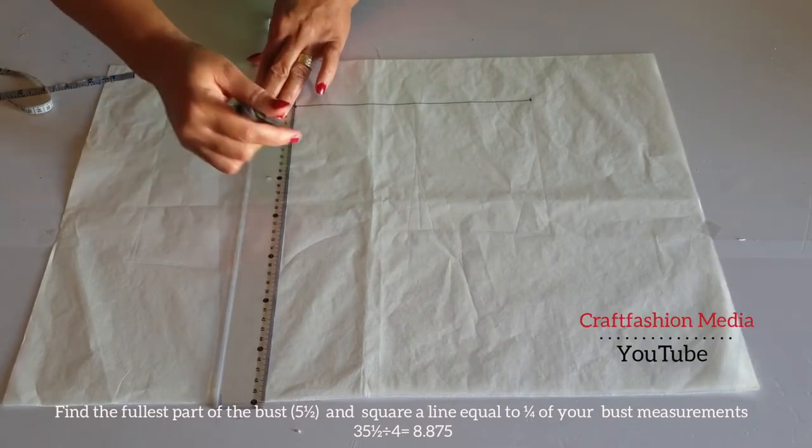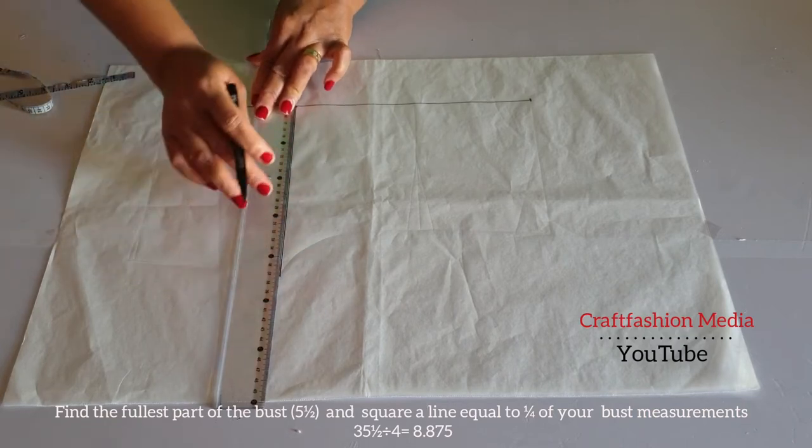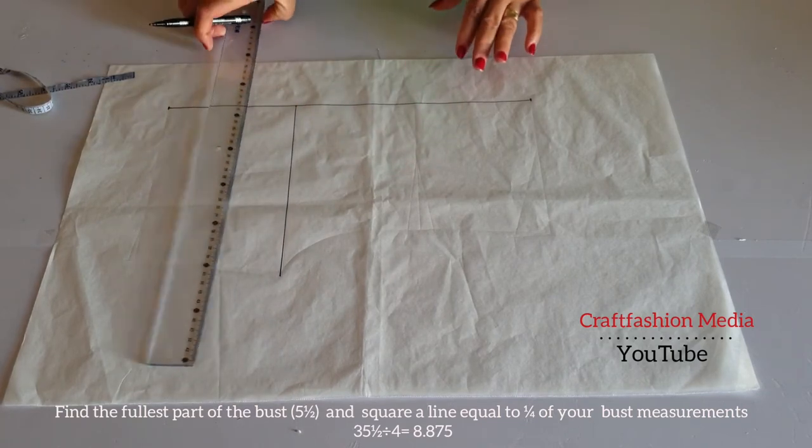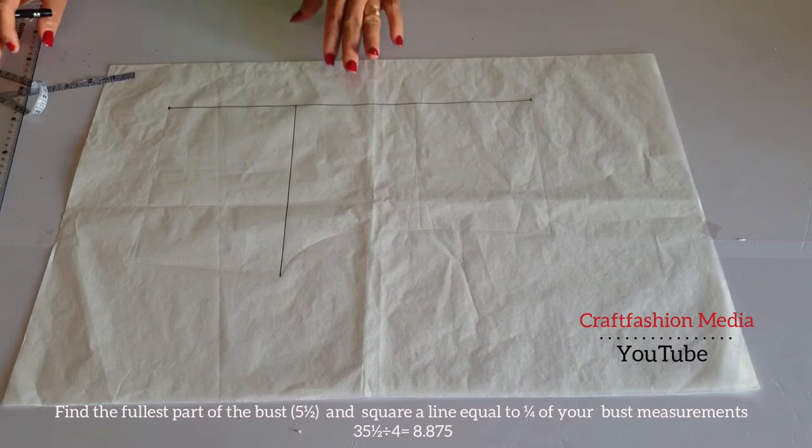And then square a line equal to one quarter of my bust measurement, which is 35 and a half inches divided by 4. And I will have 8.875.